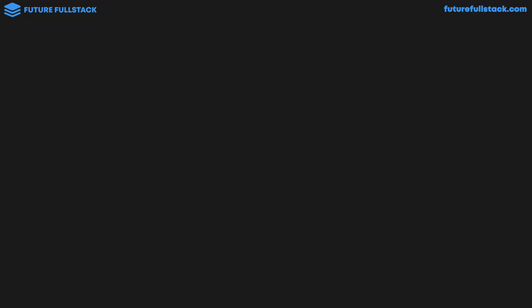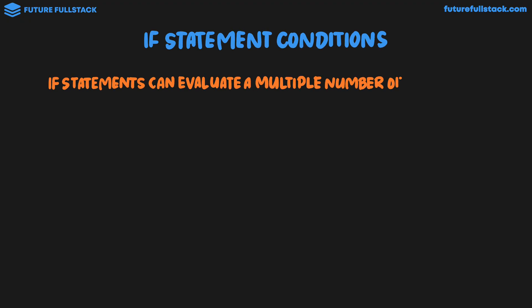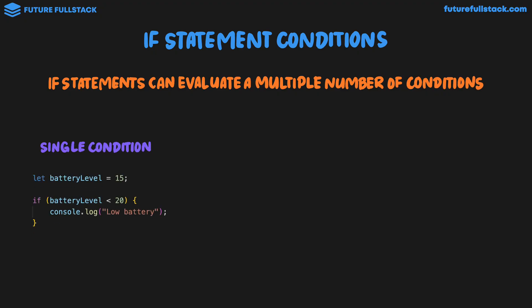Before we look at the ternary operator, I want to do a quick recap of if statement conditions. If statements can evaluate multiple conditions. We can evaluate a single condition, like in this code over here, where we just have a single if statement checking if the battery level is less than 20. When I say single condition, I just mean we have a single if statement.